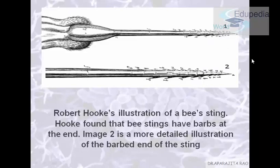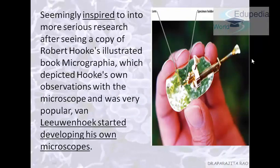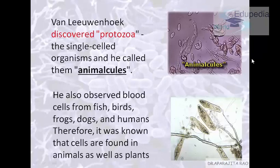He also saw the bee sting under the microscope and noted it had barbs at the end. Then came Mr. Anthony van Leeuwenhoek, the father of microbiology. He was inspired by Robert Hooke's Micrographia and started making his own microscopes. Leeuwenhoek actually made around 500 microscopes, 20 of which are still in use today. Even though his microscope looked small, it was very powerful — it had a specimen holder and a lens. He then observed protozoa, single-celled organisms, and called them 'animalcules' because they looked like small animals.